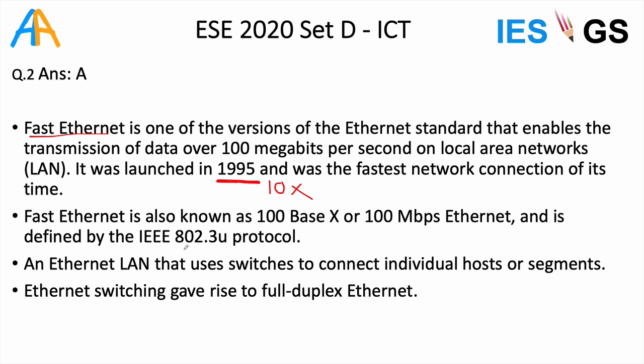Fast Ethernet is also called 100 Base-X Ethernet. A switched Ethernet LAN uses switches to connect different hosts or segments. In switching, it will give full duplex Ethernet. So the answer here is A.